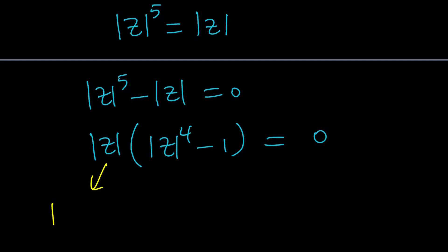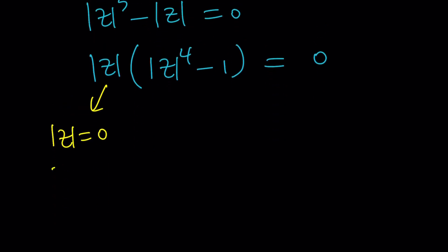Well, this one gives me absolute value of z is equal to zero. The only complex number on earth and in other universes is z equals zero, with absolute value of zero. Great.